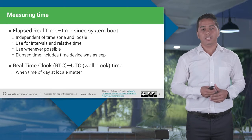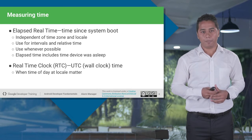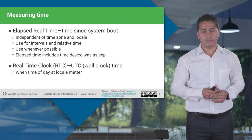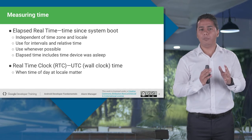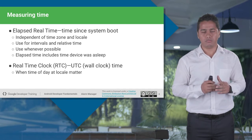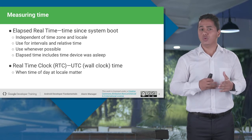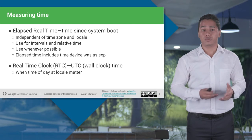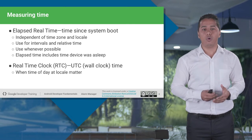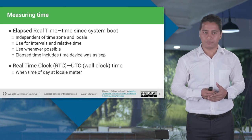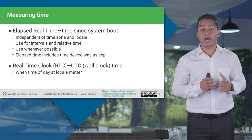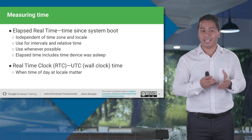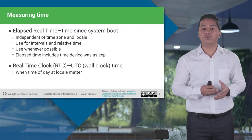Let's talk about measuring time for an alarm. There are two ways. First, elapsed real time — these are not dependent upon a time zone. For example, if you want to trigger an alarm after every 15 or 20 minutes, you want to use elapsed real time. If an alarm specifically depends upon the time zone, at that point you want to use the real time clock.